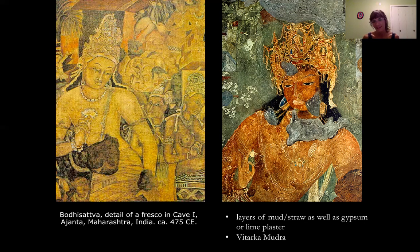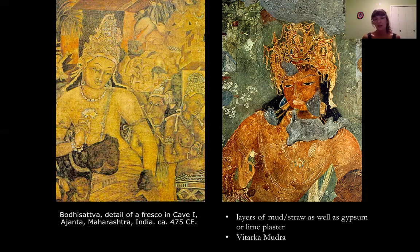These are Bodhisattvas within the temple walls at Ajanta. As with anything, different geographies and cultures change the way they utilize such techniques. So here you have fresco, but you also have layers of mud and straw as well as gypsum or lime plaster, which is applied to the walls as well.